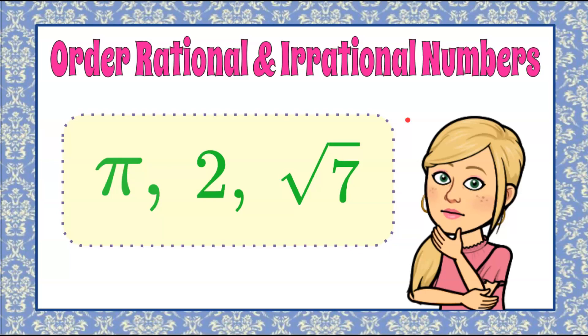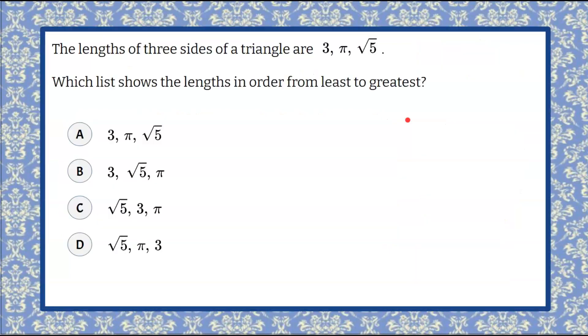It's the magic of math here and today we're going to be given three rational and irrational numbers and we're going to put them in order from least to greatest. Let's begin.